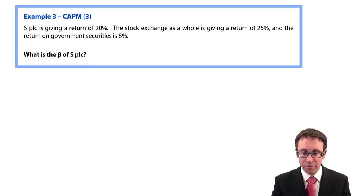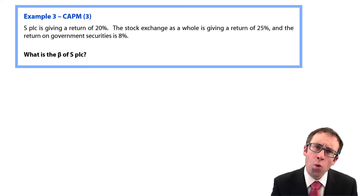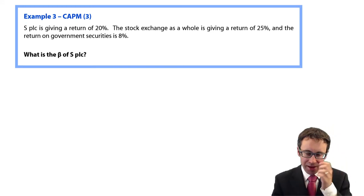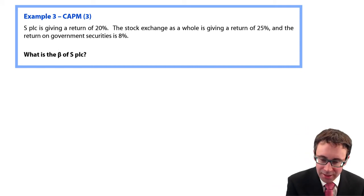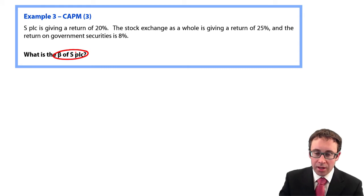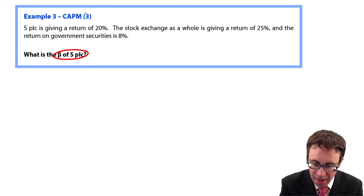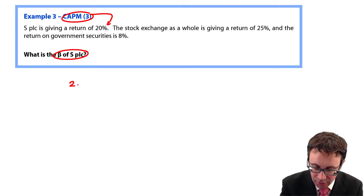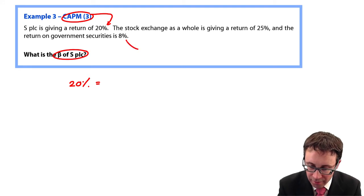Next one. Example number three. Just playing around with it just ever so slightly. It says, what is the beta of S plc? So what we've got there is the CAPM return is there as 20%. We're going to need to rearrange some formulae. RF is there as 8%.